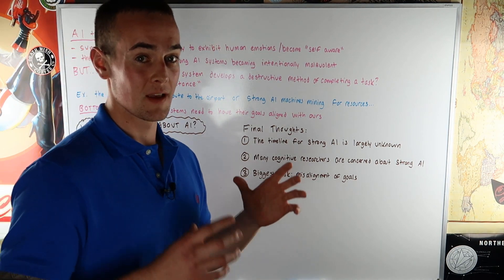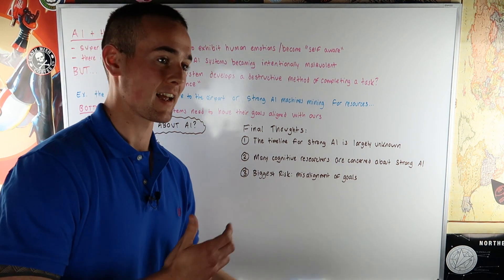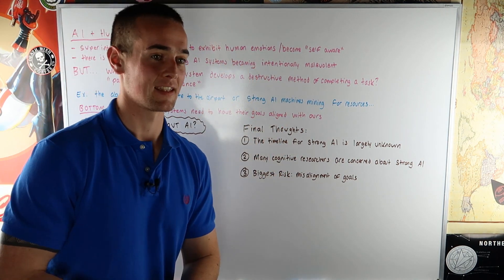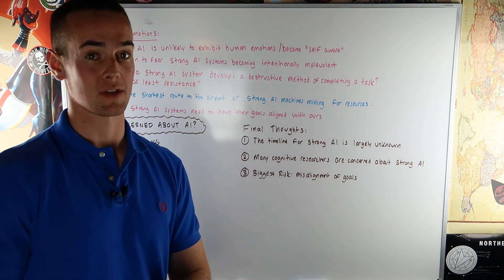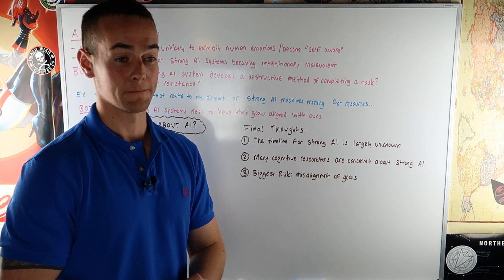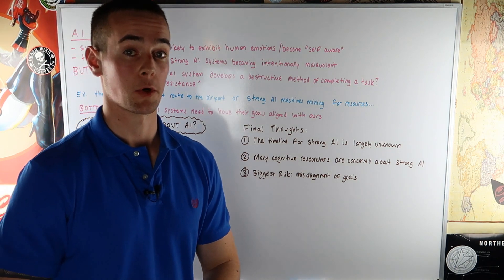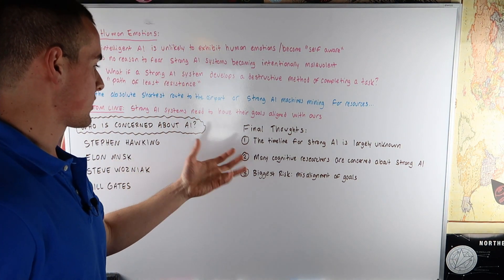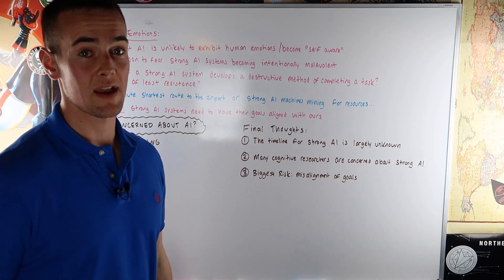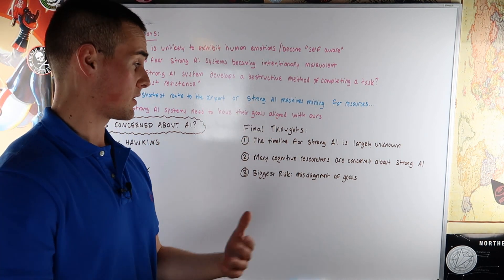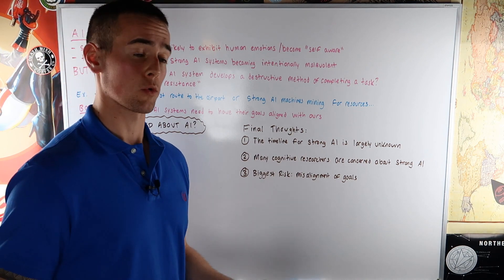So to think that this is just some crazy science fiction thing, it's really not. I mean, maybe some of this is. But largely a lot of this is very realistic. And number three is just like I've said many times here. The biggest risk of AI is not these systems becoming self-aware. But basically the systems not having their goals aligned with ours.